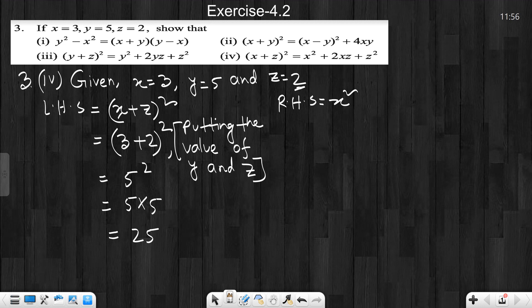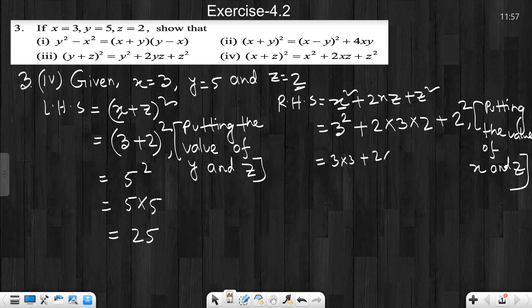Right hand side equals x square plus 2xz plus z square. x value is 3, so we write 3, power square. Plus 2x, x value is 3, z value is 2, so we write 2 times 3 times 2. Plus z square, z value is 2, power square. Putting the value of x and z. So 3 square, 3 square means 3 multiply 3.